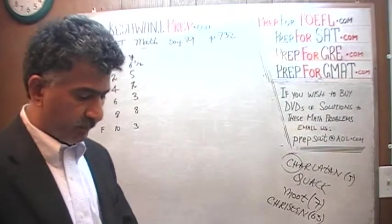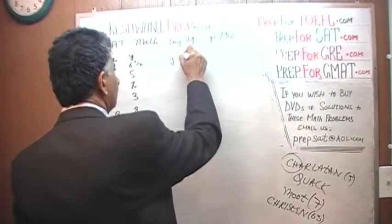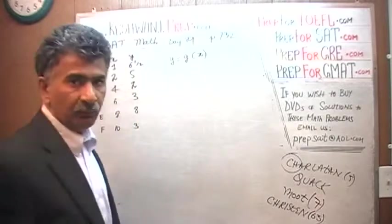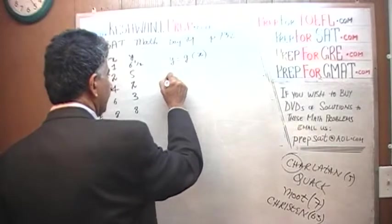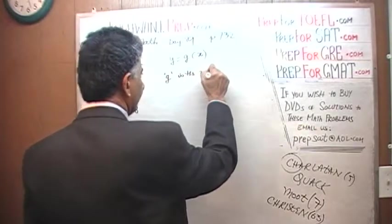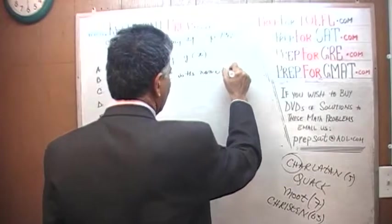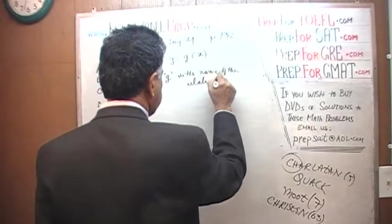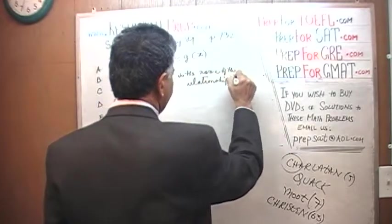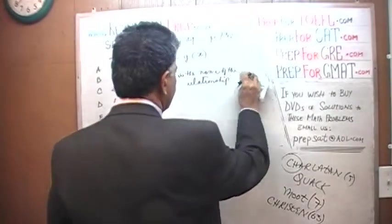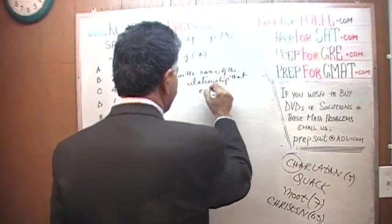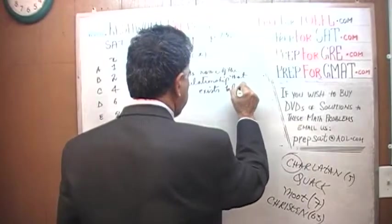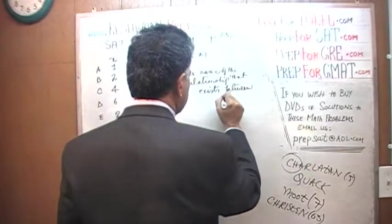The question simply is, we are given a graph of Y for the G of X. So we are told that there exists a relationship between X and Y and the name that they have given to that relationship is G. G right here that you see is the name. That is what it is. It is the name of the relationship that exists between X and Y.